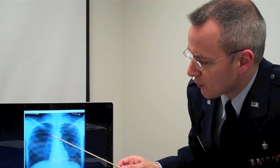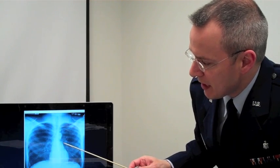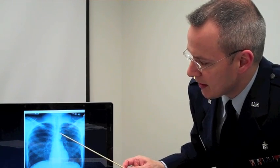Then I would look at the mediastinal contours along the right side of the mediastinum, following the superior vena cava, down to the right atrium, making up the right heart border, the left heart border, which is the left ventricle, the main pulmonary artery or trunk, and the aortic knob.